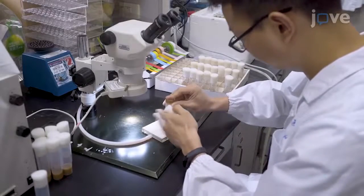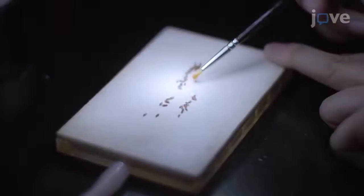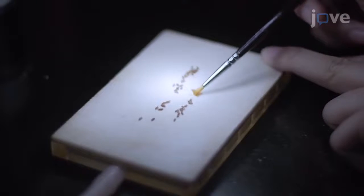Begin by collecting adult flies for each sample, making sure to collect at least triplicate samples for each genotype.